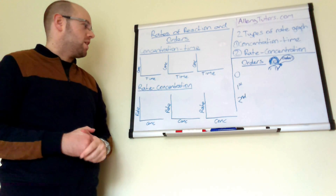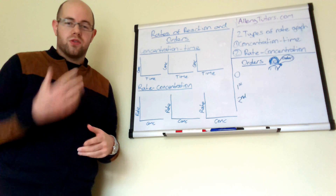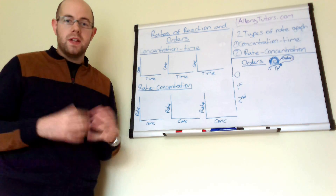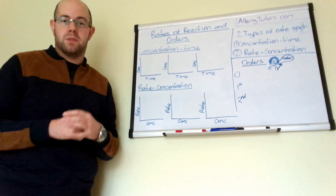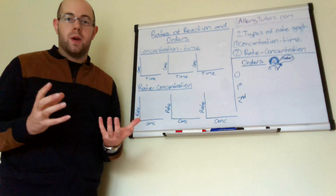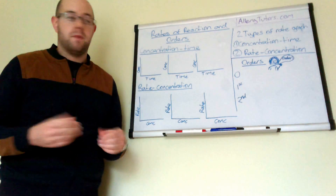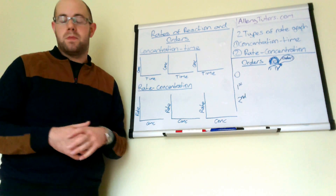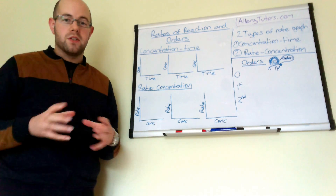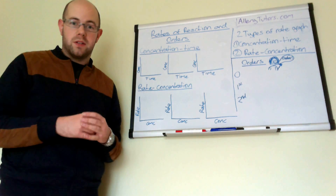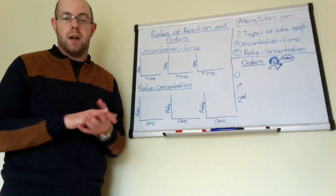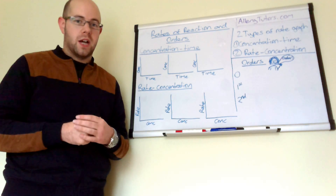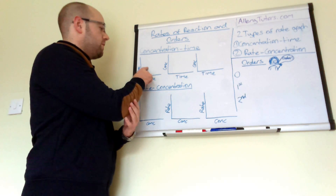Concentration-time graphs rely on you knowing the concentration of a substance and how it's varying over time, and you can only get that from practical experiments. You cannot look at an equation on an exam paper or in a book and decide if it is first order or second order with respect to a particular reactant. The only way you can do that is by doing a practical and measuring how much product is made or how much reactant is used up over time.